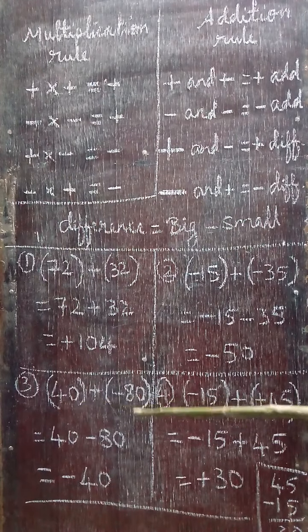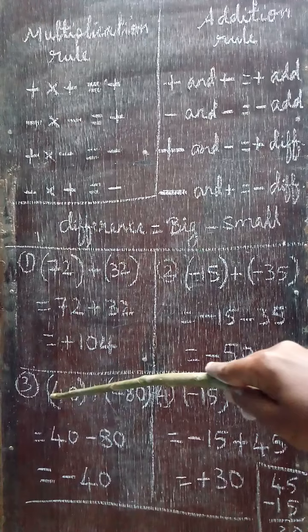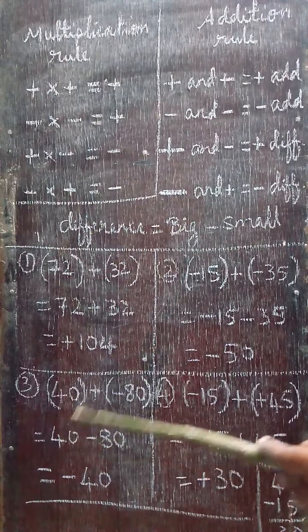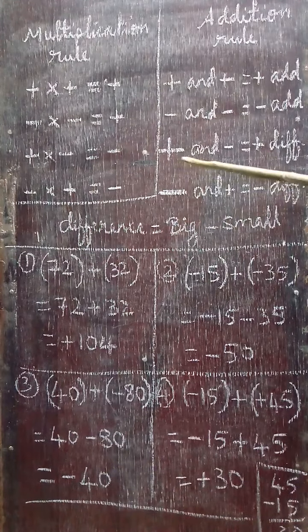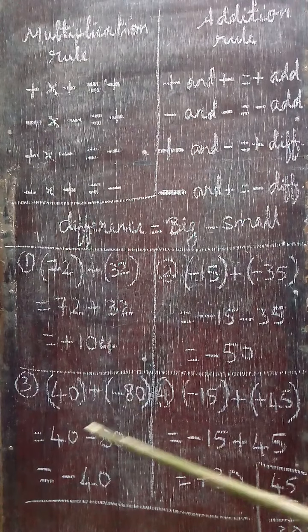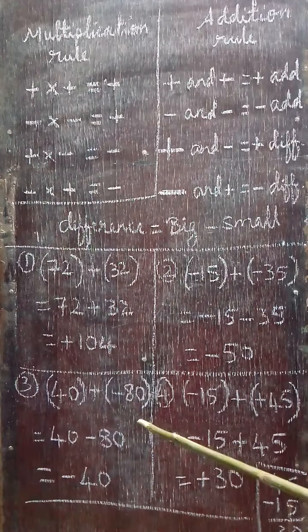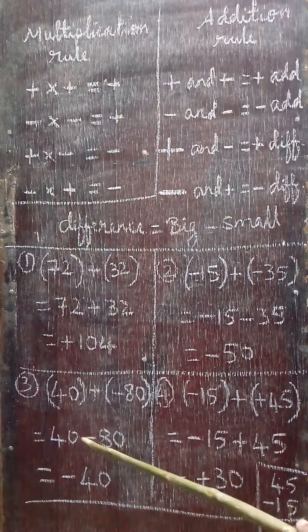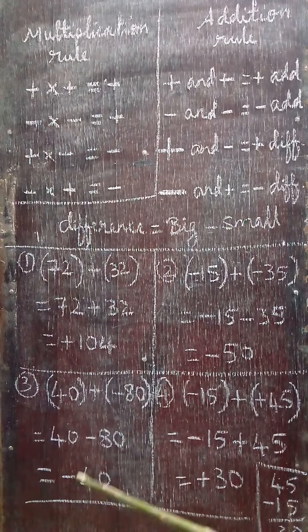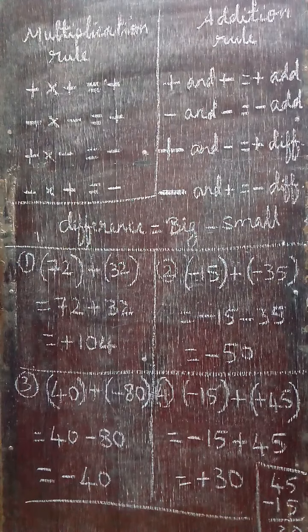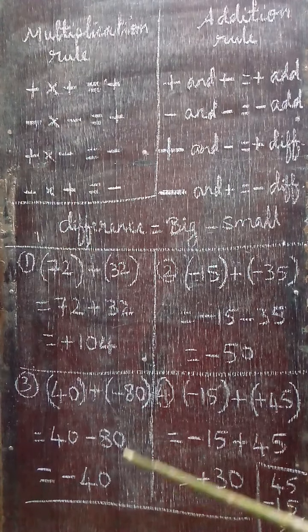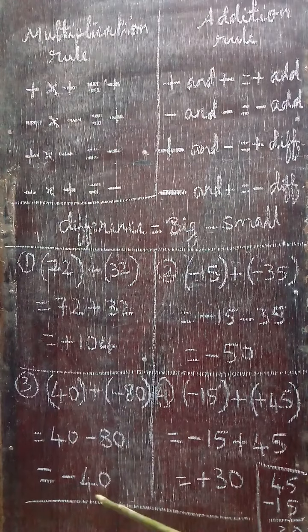Third example: 40 + (-80). Since 40 has no sign, it is +40. Open the bracket: plus into plus gives +40, plus into minus gives -80. The signs are different. The bigger number is 80 and it is negative, so put minus. Take the difference: 80 minus 40 equals 40. The answer is -40.